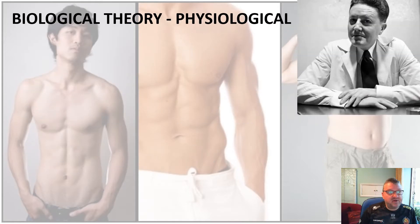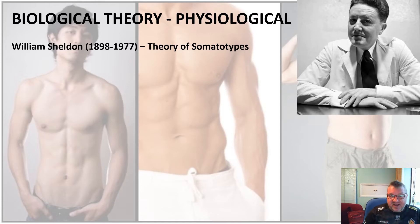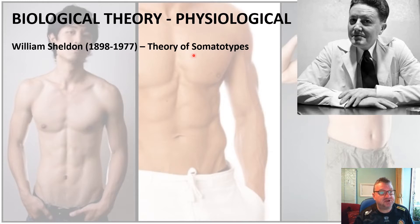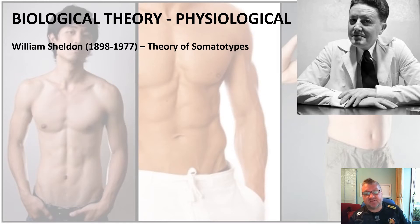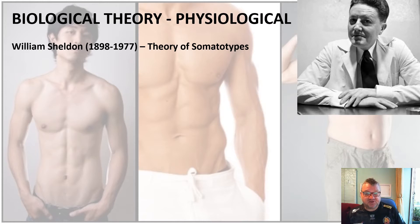So there he is — William Sheldon, 1898 to 1977. Basically his theory concerns body shape, which is known as a somatotype. I cannot stress enough that you have got to know this word for the exam. So it's Sheldon and somatotypes, and there are three different somatotypes that you need to know the names of. His theory is quite straightforward and easy to do — a nice one to get if asked about a biological theory, because it's also easy to evaluate.